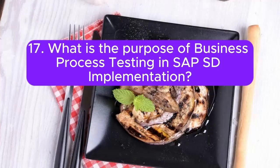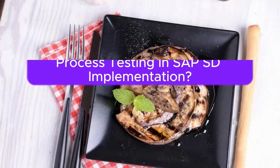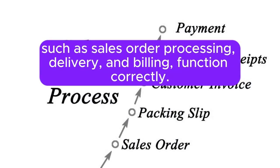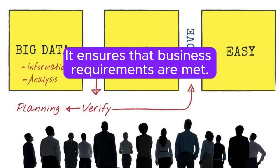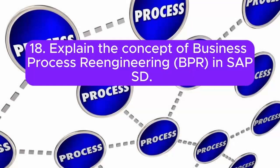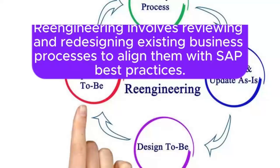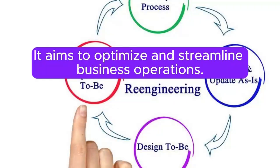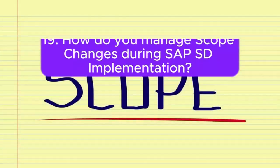Question 17: What is the purpose of business process testing in SAP SD implementation? Answer: Business process testing validates that end-to-end business processes in SAP SD, such as sales order processing, delivery, and billing, function correctly. It ensures that business requirements are met. Question 18: Explain the concept of business process re-engineering (BPR) in SAP SD. Answer: Business process re-engineering involves reviewing and redesigning existing business processes to align them with SAP best practices. It aims to optimize and streamline business operations.